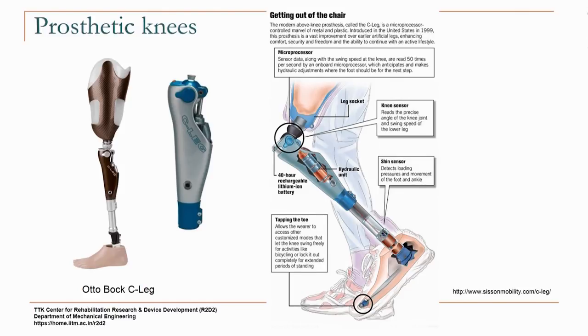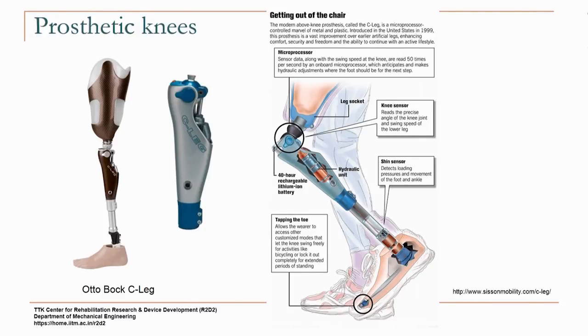There is a mechanism to switch programs — for instance if the person wants to let the knee swing freely as when cycling, or if they want to lock it for prolonged standing without having to think about it. They access different programs by tapping the toe repeatedly. There are other microprocessor-controlled knees as well that help users go up and down stairs step by step, allowing a more natural gait, but they are very expensive.